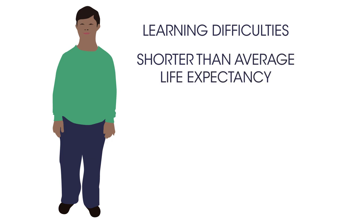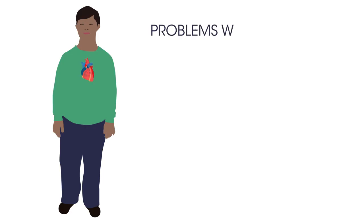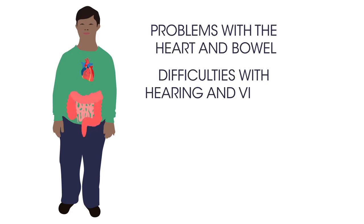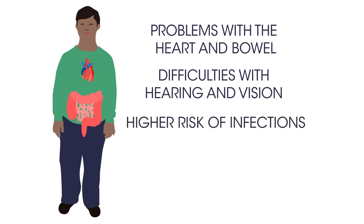Some conditions more common in people with Down's syndrome include problems with the heart and bowel, difficulties with hearing and vision, and a higher risk of infections. However, everybody who has Down's syndrome may be affected in different ways.